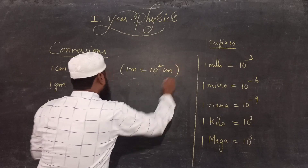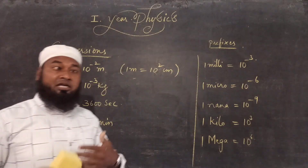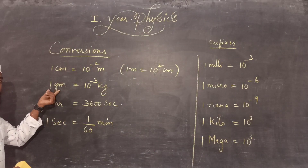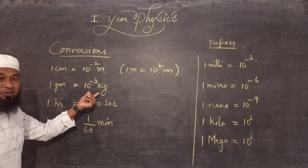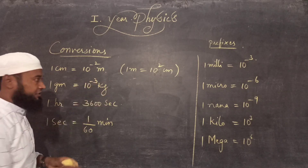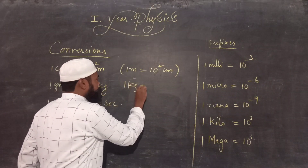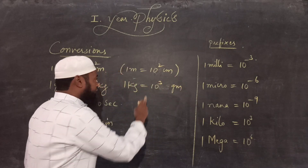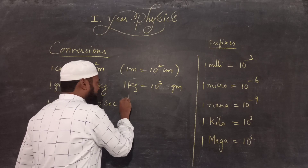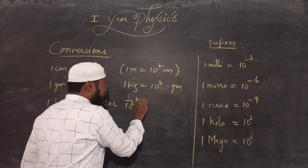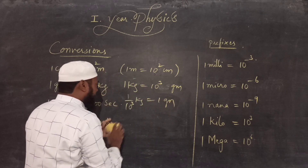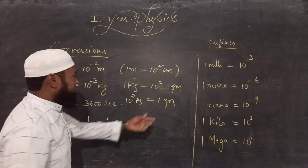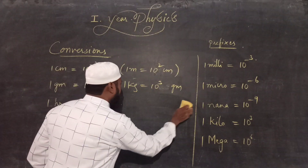We also have to convert kg into gram and gram into kg. 1 gram, if you want to convert into kg, will be multiplied by 10 to the power minus 3 kg. Why? Because 1 kg equals 1000 grams, and 1000 can be written as 10 to the power 3. Taking 10 to the power 3 to the other side gives 1 by 10 to the power 3 kg equals 1 gram, so 1 gram equals 10 to the power minus 3 kg.